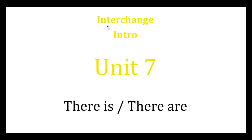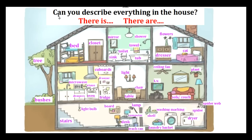Okay, you finished the Interchange intro Unit 7 video. Now you understand 'there is' and 'there are.' For more practice, can you describe everything in the house? Use 'there is' and 'there are.' For example, there are flowers in the bedroom, and there is a toilet in the bathroom. Can you describe everything in the house? Thanks for watching and good luck.